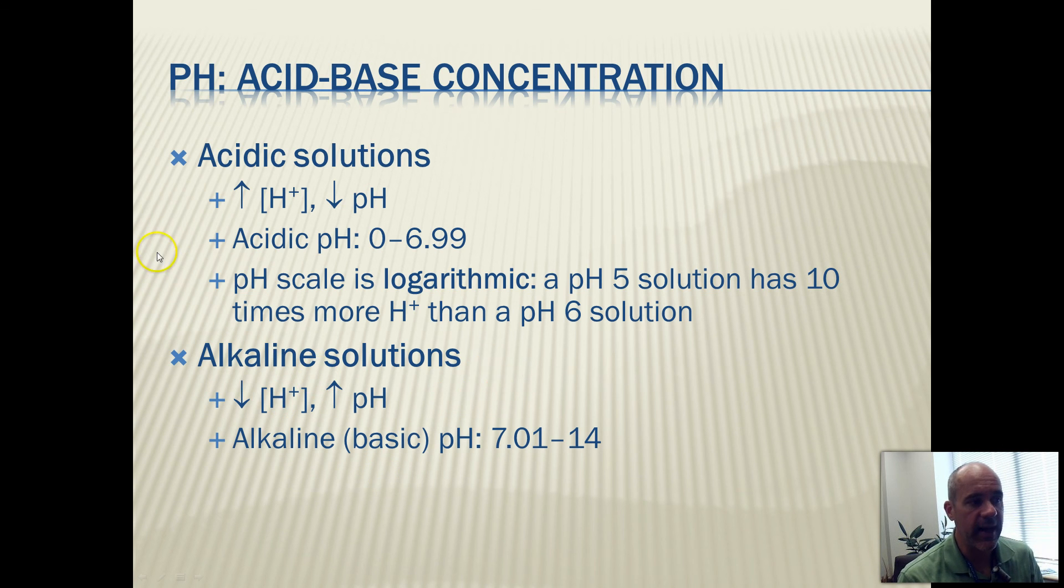On the alkaline side, anything above 7, 7.01 to 14, is the basic or the alkaline side of the pH scale. And as you're going up on the pH scale, hydrogen ion concentration is going down. You just got to kind of remember that it's the opposite is true. Those two go in reverse of each other.